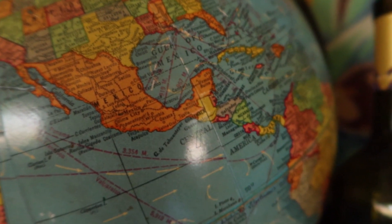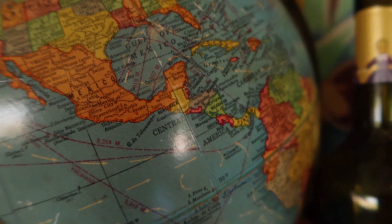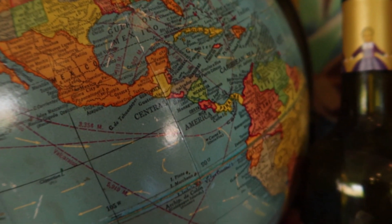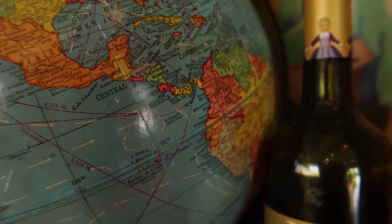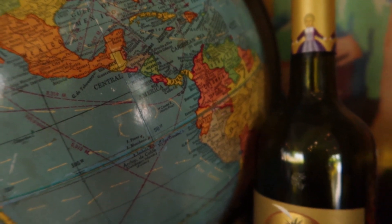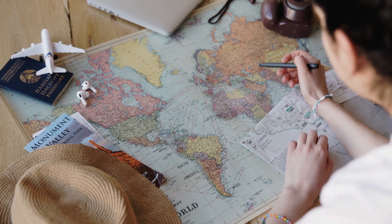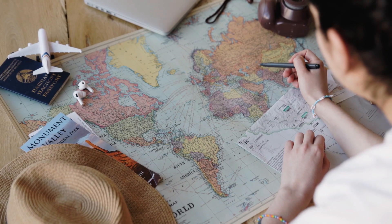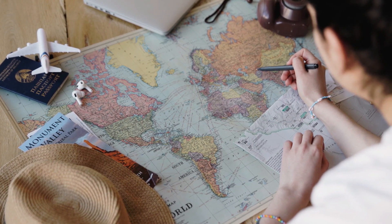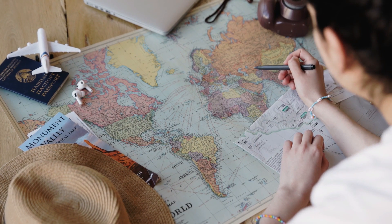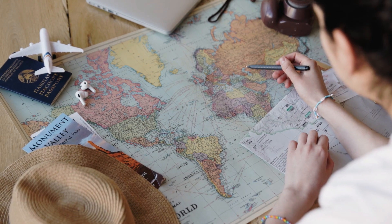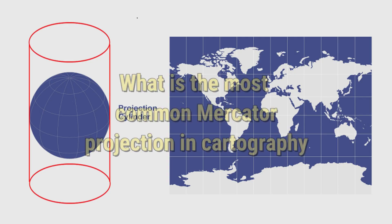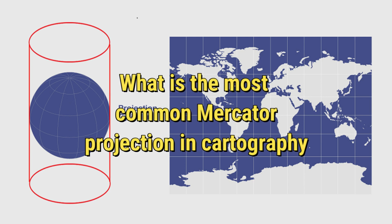Of course, projecting an entire world onto a flat sheet of paper is an outlet for many dimensional errors or curvatures. Geographers found it very difficult to represent the world on maps until the Mercator projection, invented by Gerardus Mercator in 1569, appeared — and it is still the most widely used projection in cartography.